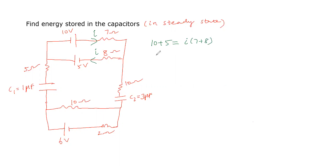This gives 15 equals 15 times I, so current I equals 1 ampere. In this path, we are getting 1 ampere current — 1 ampere here, and 1 ampere here.